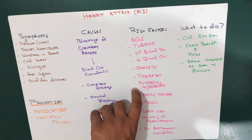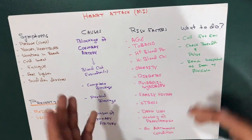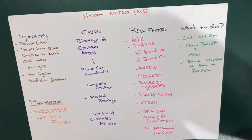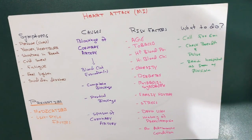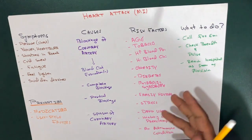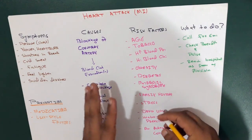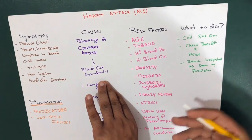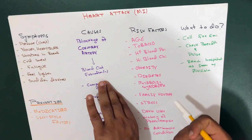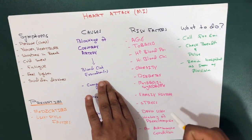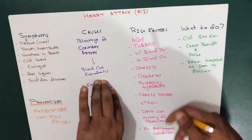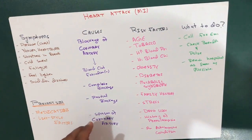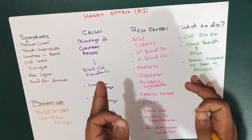Metabolic syndrome and a family history of heart attacks also play a significant role. Lack of physical activity — sitting all day and accumulating body fat — is another risk factor. Stress can also increase your risk of heart attack, as can illicit drug use such as cocaine, which can trigger a spasm of the coronary arteries.